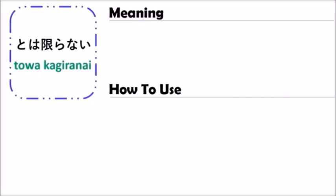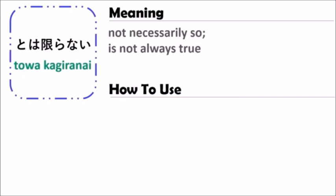The grammar of とは限らない has the meaning that 'it is not necessarily so' or 'it is not always true.' When you use the grammar of とは限らない, you can use it with a verb.